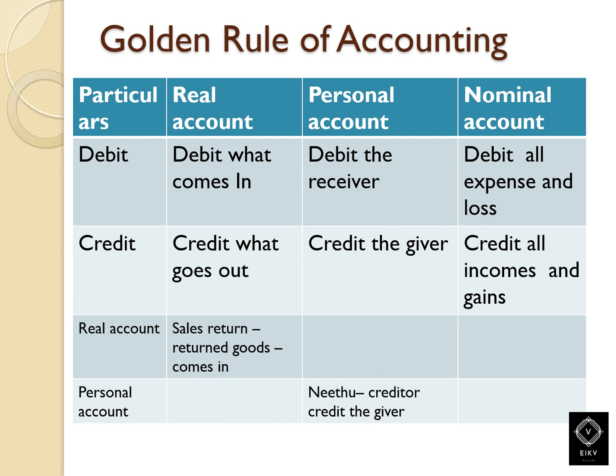Today's transaction is that goods have been returned from a person — after the sale, the goods are returning to the business. Goods is a real account, so the rules of real account will apply. For sales return, we will debit the sales return account. The customer is a person, so the rules of personal account will apply — we will credit the customer's account.